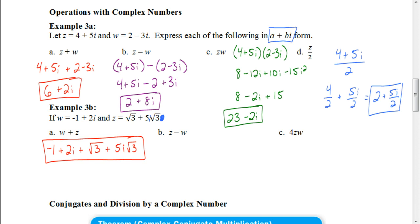It's z minus w. So with that one, you should have square root of 3 plus 5i square root of 3 minus quantity negative 1 plus 2i. So when you distribute the negative through, that's about the only thing that changes. So you'd get, when you distribute this negative through, you'd get a positive 1 here. And distribute the negative through, you'd get a negative 2i here. But otherwise, the rest of it stays the same. There's no like terms that we can add together, so that would be your final answer.